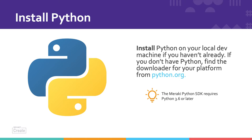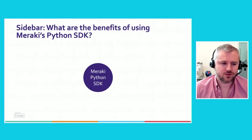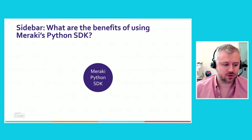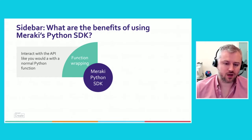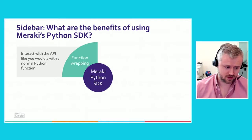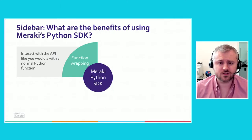Before we dive into the code, let's do a quick sidebar and review the benefits of using Meraki's Python SDK. You can make direct HTTP requests to the dashboard API in any programming language or REST API client. But using a client library like the Python SDK, where we've wrapped all those API calls in Python functions, will make it easier for you to focus on your specific use case without the overhead of having to write functions to handle the dashboard API calls. So you can interact with the API endpoints like you would with a normal Python function — this is a lot easier than manipulating JSON text strings.